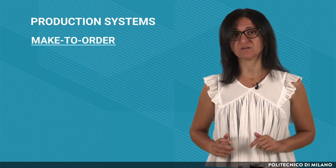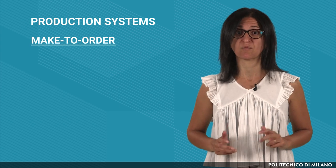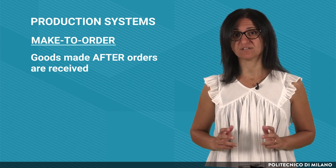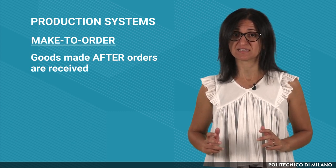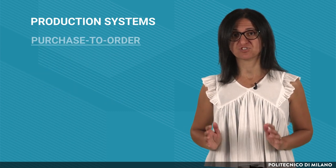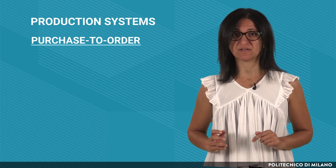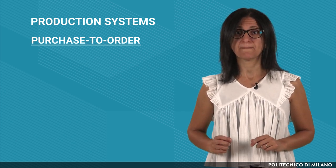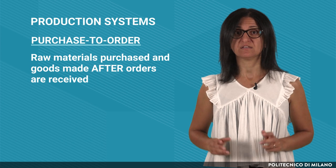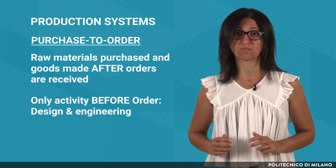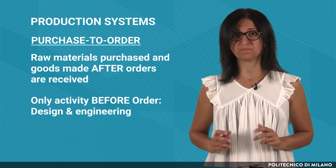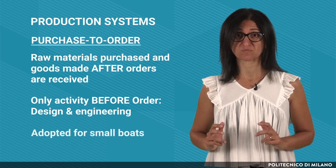In a make-to-order production system, the products are made from raw materials and components after receiving the customer orders. Make-to-order systems are adopted, for example, in the furniture industry or for producing top-level cars. A purchase-to-order production system is similar to a make-to-order one, but also the raw materials are bought after receiving the customer orders. The only activity already performed by the company is the product design and engineering. For example, purchase-to-order systems are adopted for small boats.